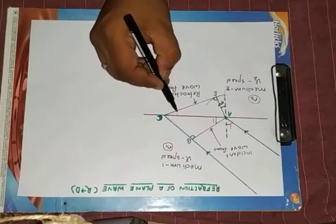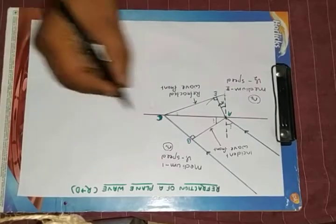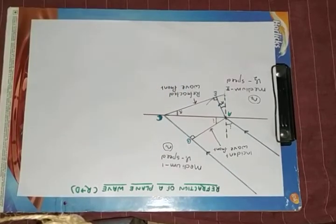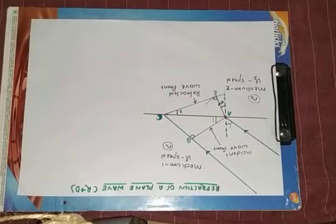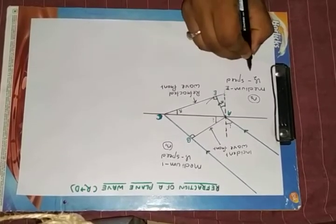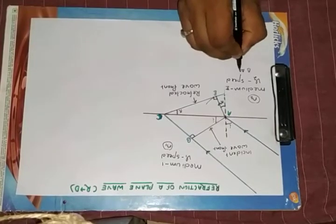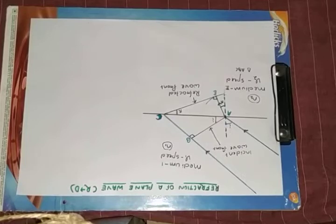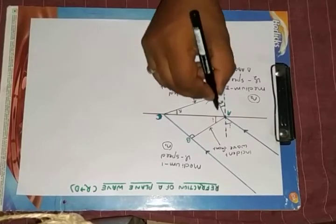is 90, which means this will be r. Now let us see from the triangle ABC.